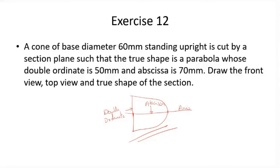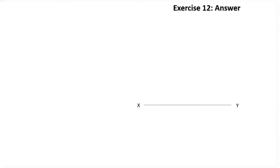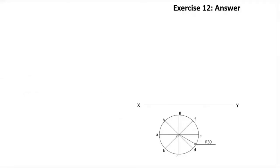Now how do we achieve this while sectioning a cone? First, the XY line is drawn. The dimensions of the cone are given, and the top view is drawn as a circle. The circle is divided into eight equal parts so that all the generators are drawn. O is the apex.